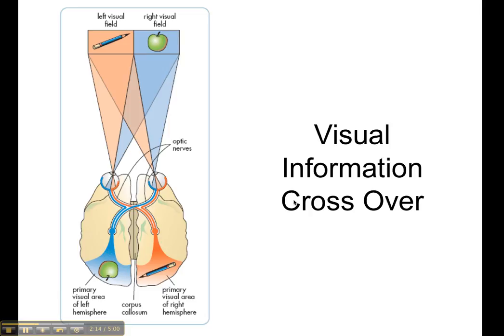Rather than, what you'll notice is that information in the left visual field, so information that's here, the pencil, the two parts of the eye which are seeing this are actually the right side of both of the eyeballs, and you see them here highlighted in red. Now, that information is transmitted to the right side of the brain, so the right primary visual cortex.